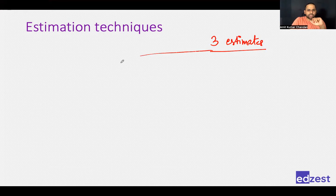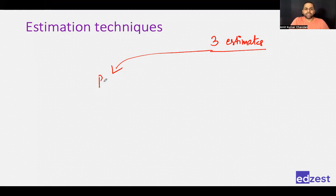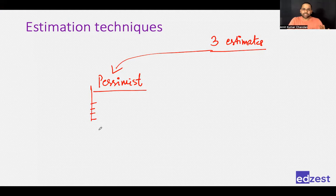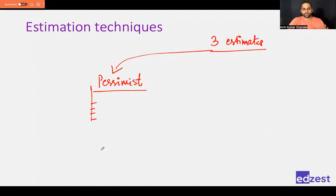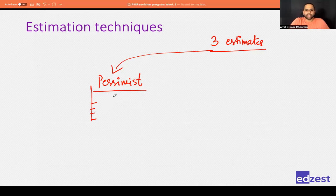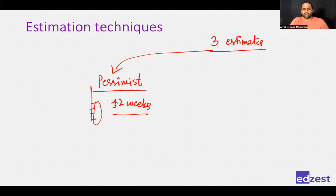We are relying on our team's experience and asking for three estimates instead of one. One is the pessimistic estimate — imagine everything in the project going wrong, all risks happen. What would the estimate be? For example, the team might say this work package will take 12 weeks if everything goes wrong. You take an average of all team members' answers and arrive at 12 weeks as your pessimistic view.